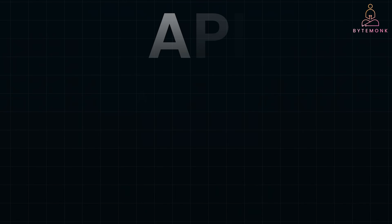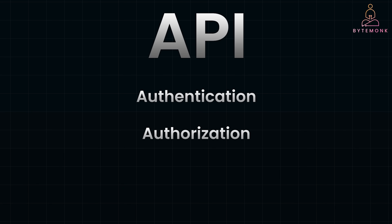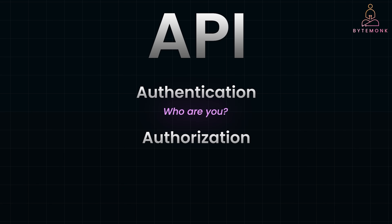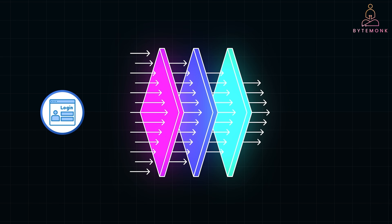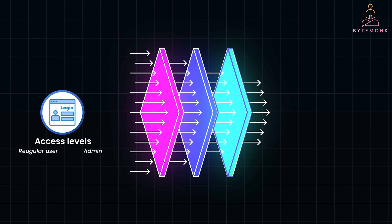Let's clear up some common confusion between authentication and authorization. API authentication answers the question: Who are you? It is about verifying the identity of the client or user trying to access the API. API authorization, on the other hand, answers the question: What are you allowed to do? It's about determining what permissions the authenticated user has. To put it simply, authentication verifies your identity, and authorization verifies what you are allowed to do once you are authenticated. For example, when you log into a website, that's authentication. You may have different access levels based on your role — as a regular user you might only be able to view your profile, but as an admin you might be allowed to edit users or modify data.